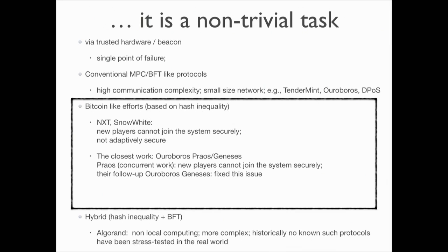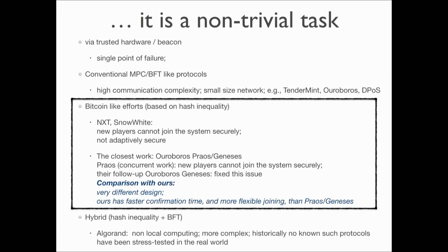I will focus on the Bitcoin-like or Nakamoto-like protocols. Efforts have been made. You can also hybrid the hash inequality and BFT protocols — Algorand is a good example. But as I argued, no BFT-like large-scale protocol has been stress-tested. The closest related works are Orbis, Praos, and Genesis from the IOHK group. Our design is very different, and our protocol has a faster confirmation time and is more flexible so that new players can join the system.